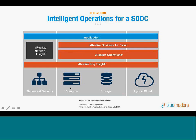VMware positions vRealize Operations in the middle, spanning compute, storage, and hybrid cloud. On the network and security side there is vRealize Network Insight, and vRealize Log Insight spans all of this along with VRB. By adding manager packs and pulling everything together, we can show full application visibility within VROps. The correlation between vRealize Business, Log Insight, and VROps means VROps becomes your first and final destination for troubleshooting your environment and looking at workloads.